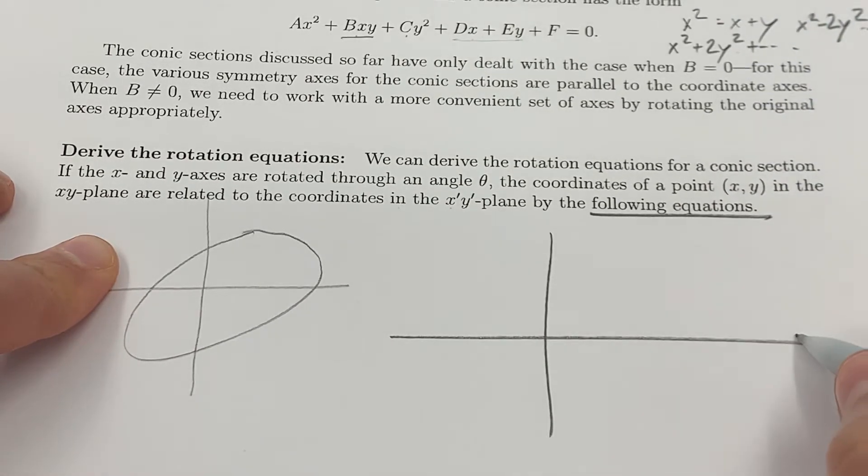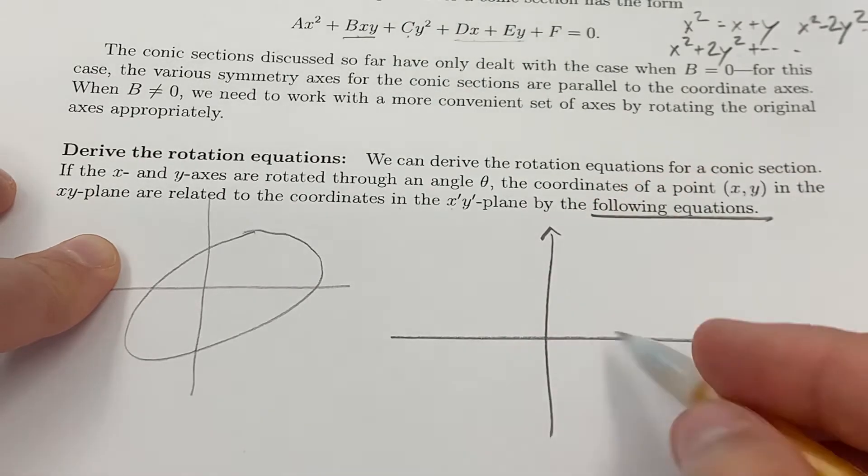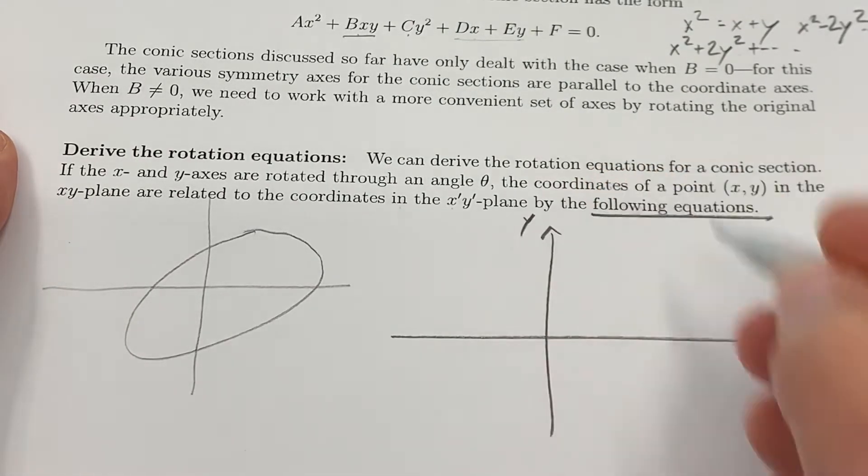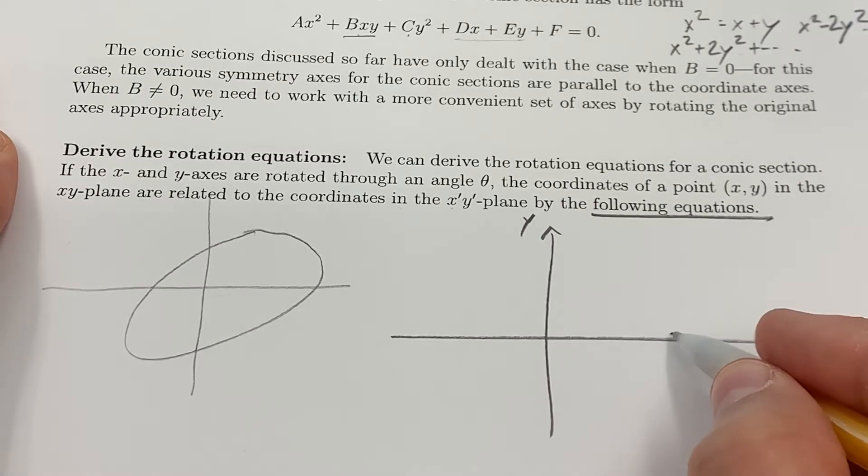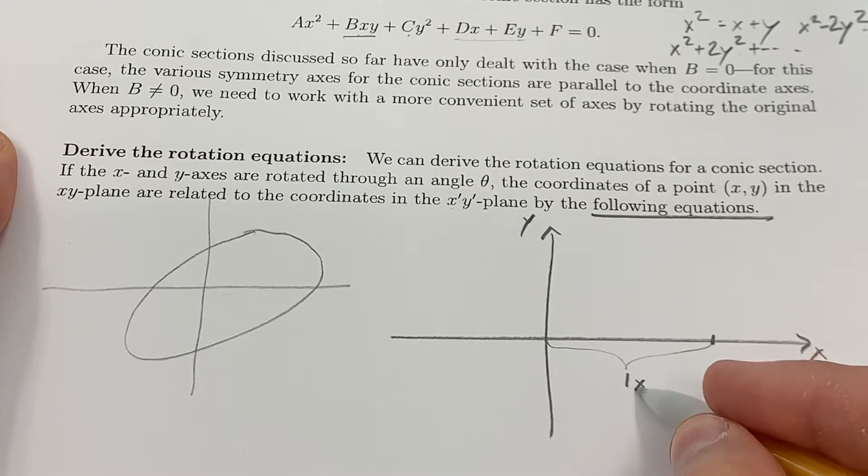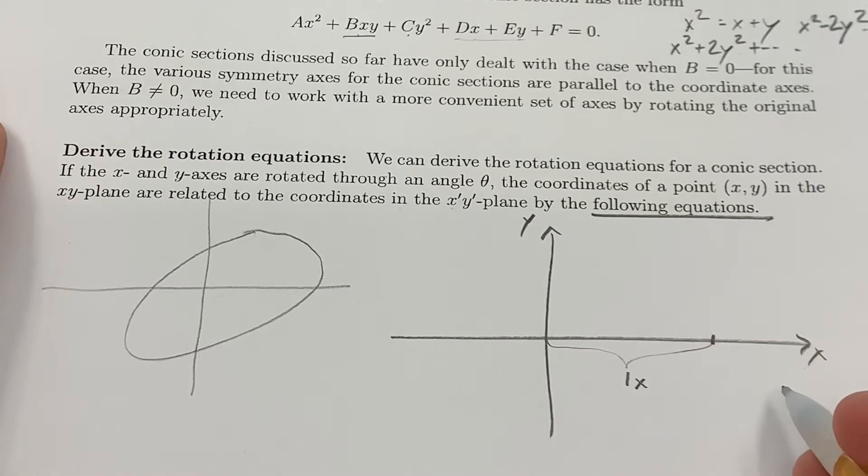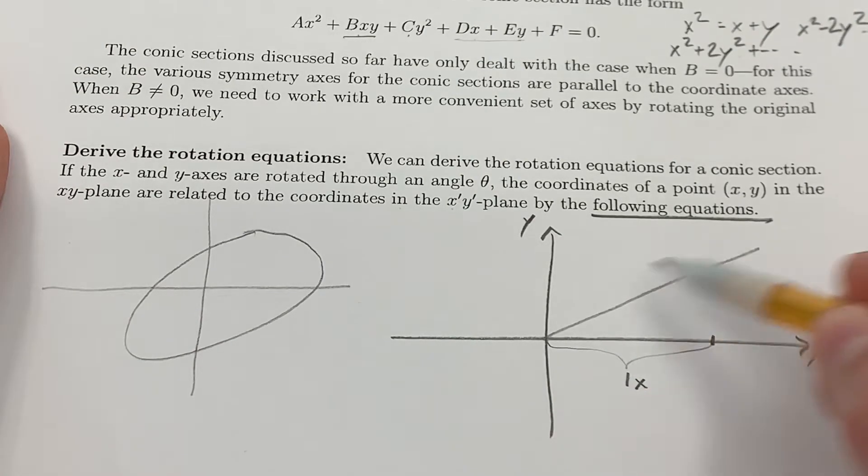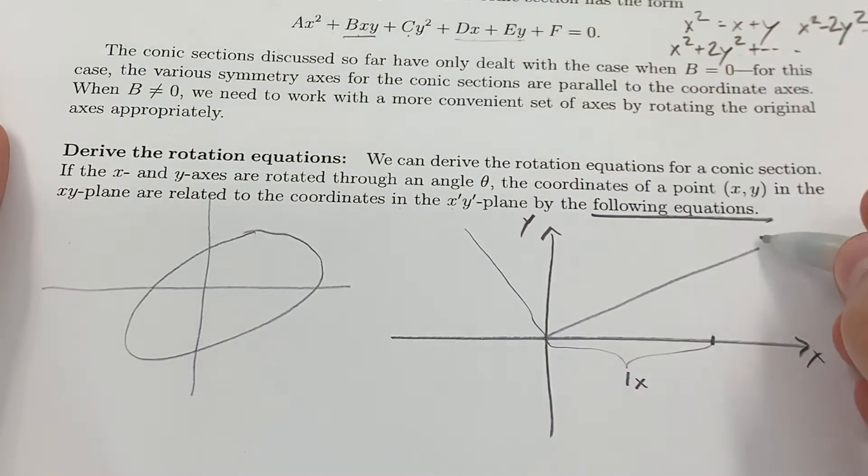And the way we're going to do that is I'm actually going to describe to you, if this is the x and that's the y direction, how would you describe this distance? Now I will describe this distance as 1x, 1 in the x direction.